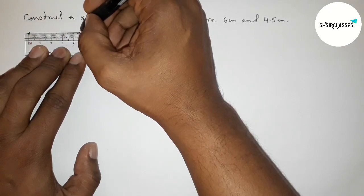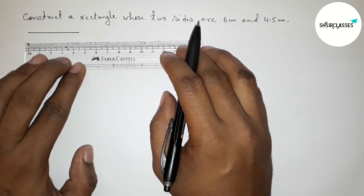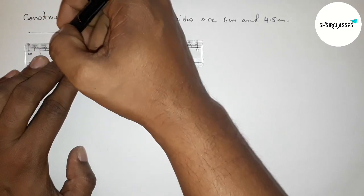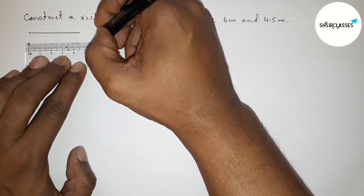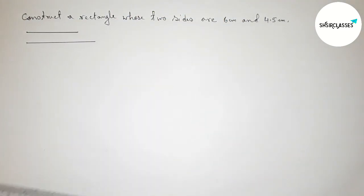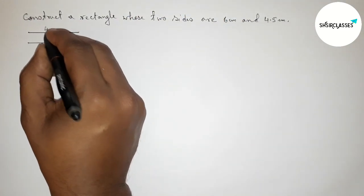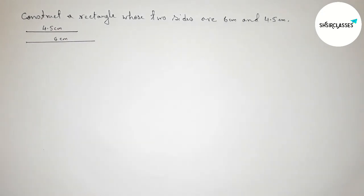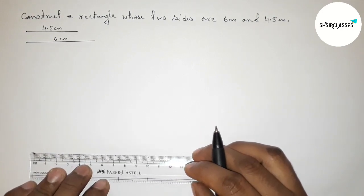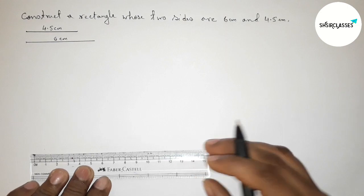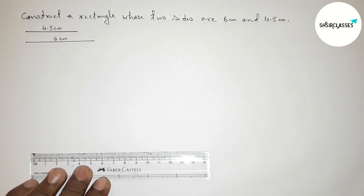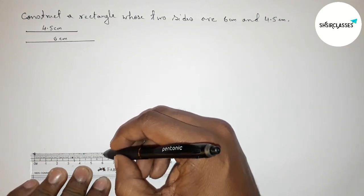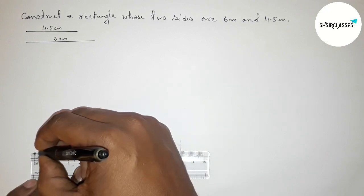Drawing another line of 6 centimeter, starting from zero — this is a 6 centimeter line segment. So this one is 4.5 centimeter and this one is 6 centimeter. Next, drawing here again a 6 centimeter line segment — starting zero, 1, 2, 3, 4, 5, 6 — this is a 6 centimeter line segment.